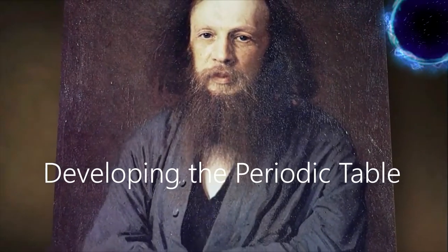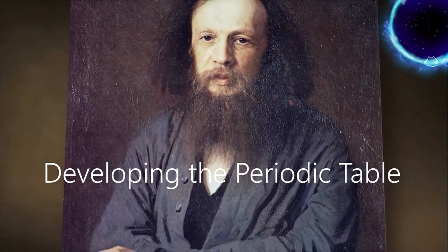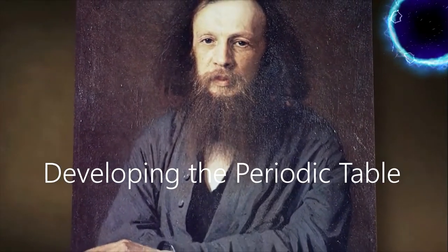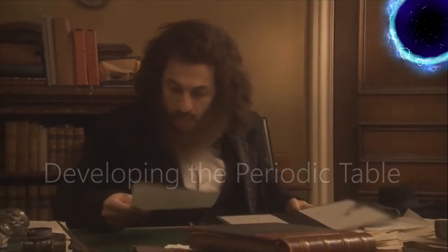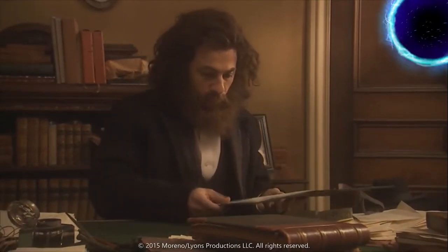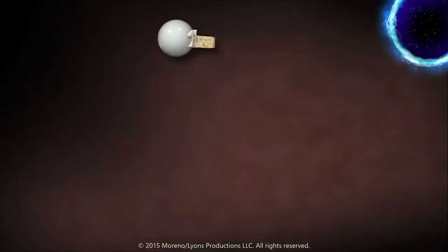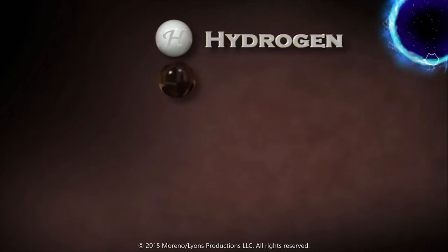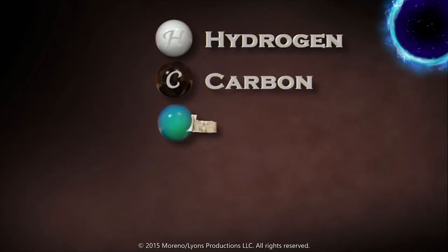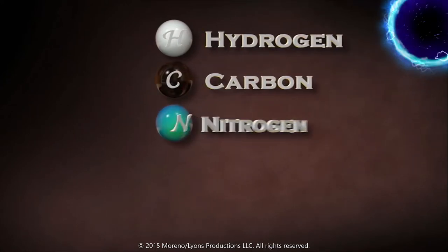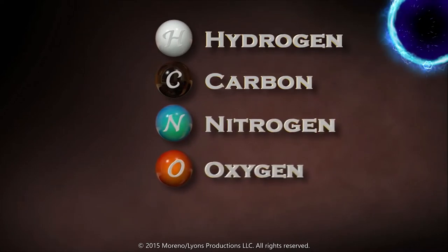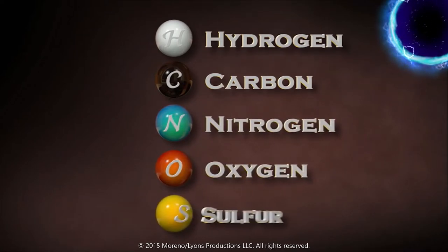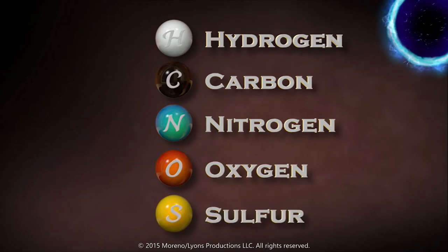Although Dmitry Mendeleev gets most of the credit for inventing the periodic table, he was not the first to sense a hidden order among the elements. Ever since the early 1800s, when it was first proposed that each element had its own unique kind of atom, chemists had been working to determine their atomic weights — the amount an atom of each element weighed.